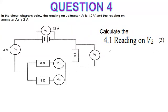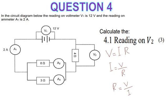For electric circuits, we use Ohm's law. The formula is: V equals current times resistance. If you are looking for current, current equals voltage over resistance. If you are looking for resistance, resistance equals voltage over current. The unit of voltage is volts, unit of current is amperes, and unit of resistance is ohms.